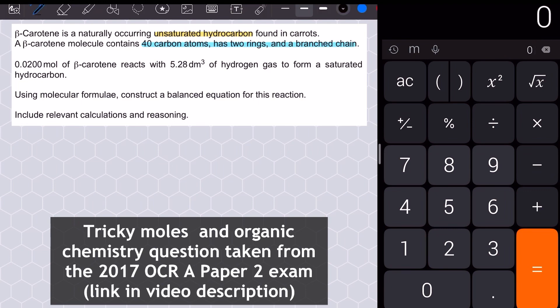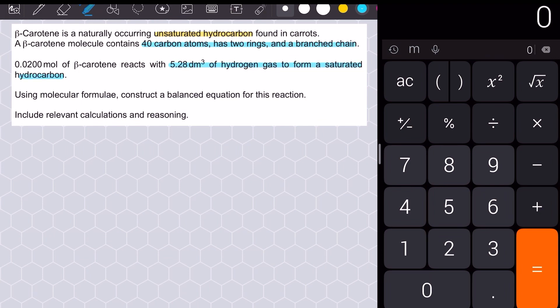This question is all about the alkene to alkane reaction in chemistry, but it's for a hydrocarbon called beta-carotene, which has lots of those C double bond C groups, along with two rings and a branch.